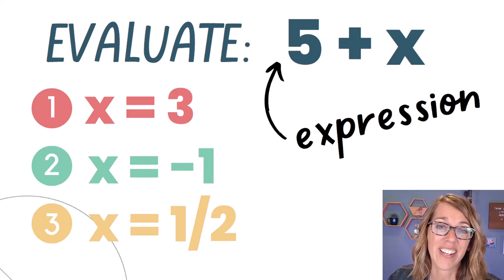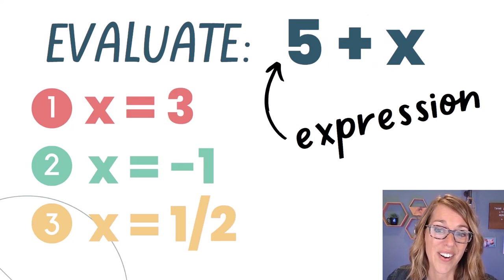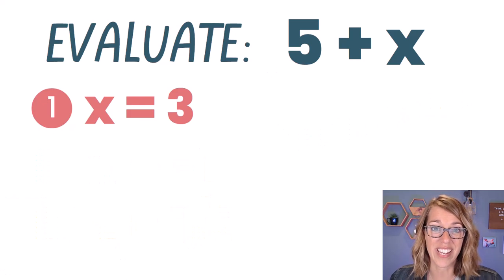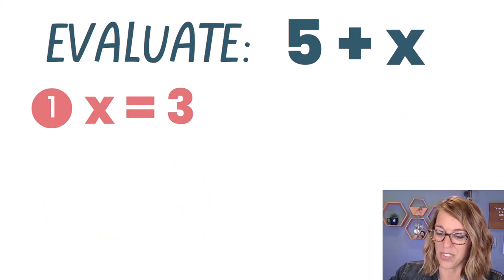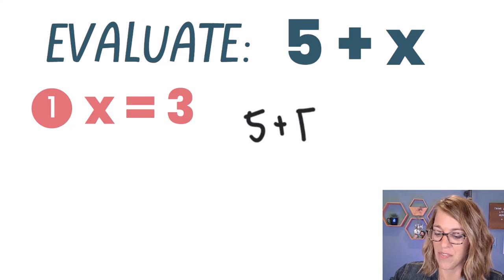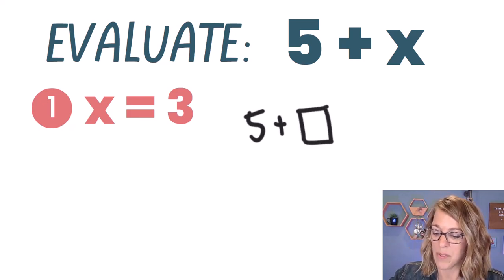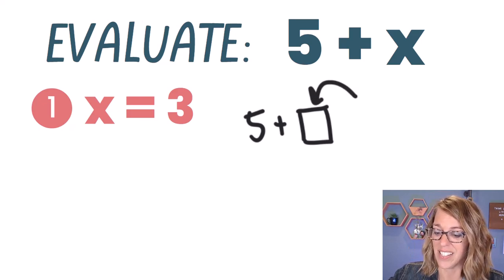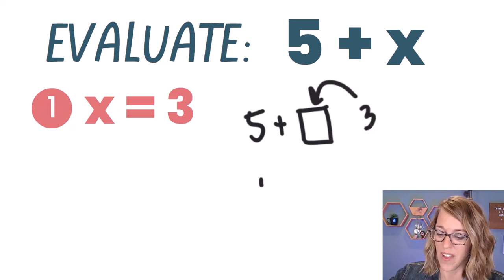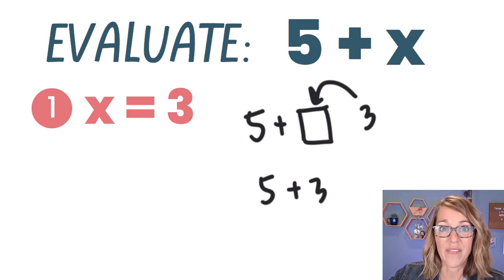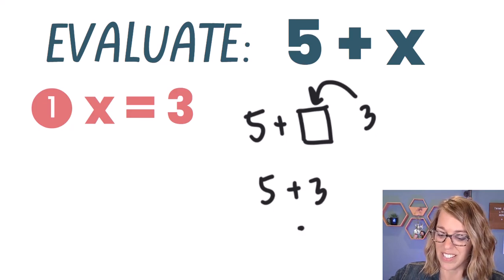We are going to plug in values for X, starting with X equals three. So as I'm starting with X equals three, I can take that 5 + X and I can think of it as 5 plus whatever I'm going to plug in there for X. Now I'm going to plug in X is a three, so this becomes 5 + 3, and 5 + 3 is eight.